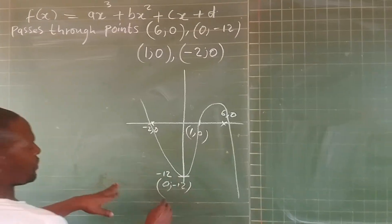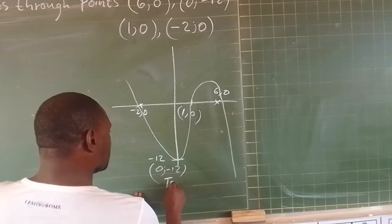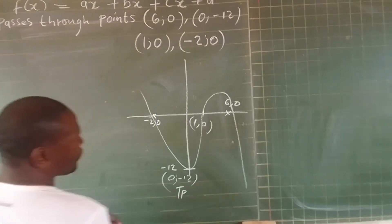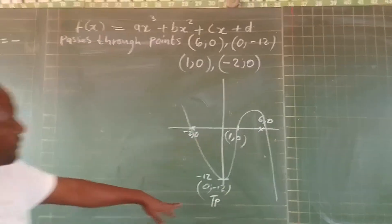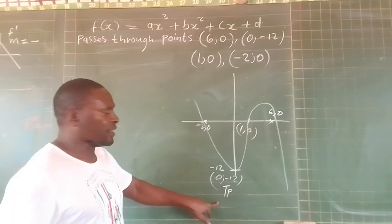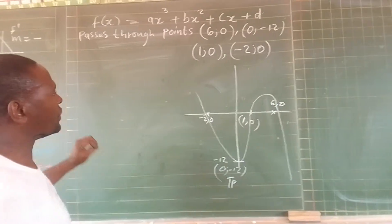Now, you must make sure that you indicate that this is a turning point so that when you work here, you will know that at the turning point, the first derivative is going to be zero.